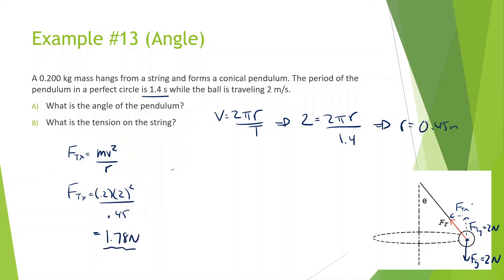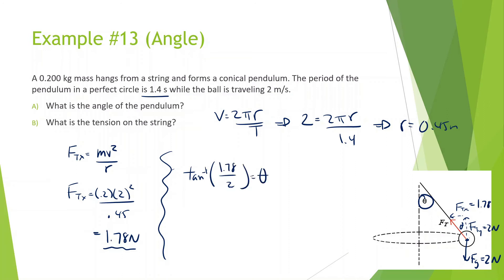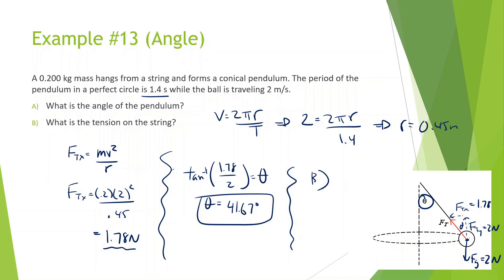Now that we know the x-component is 1.78 newtons, we can find the angle since it's the same angle throughout. We do tan inverse of opposite 1.78 divided by adjacent 2, which gives us theta equals 41.67 degrees. For part B, the force of tension is found using the Pythagorean theorem: square root of 1.78² plus 2², which gives 2.68 newtons.